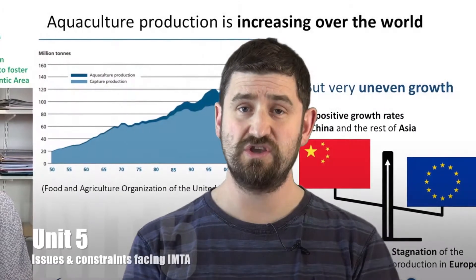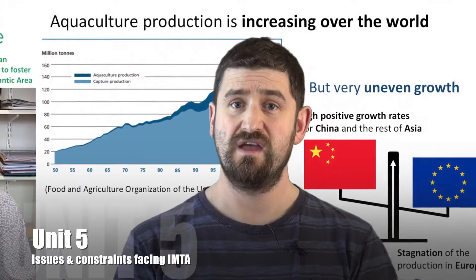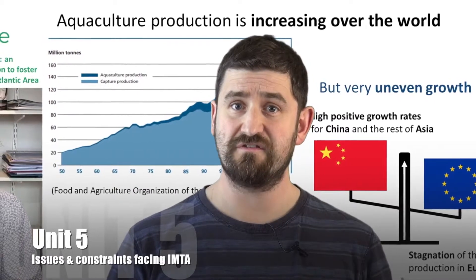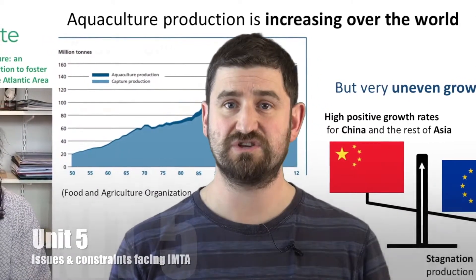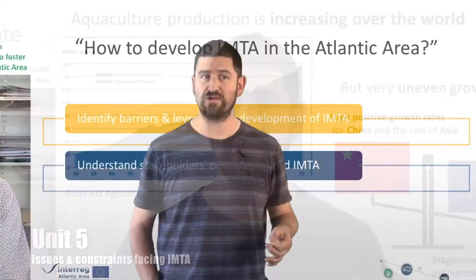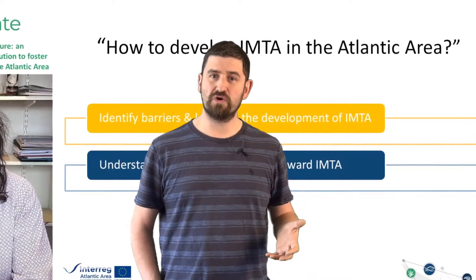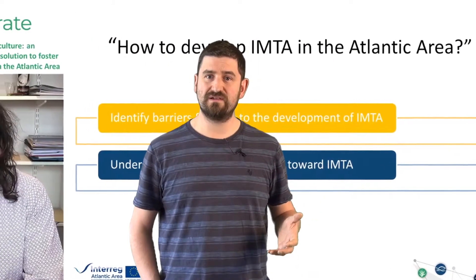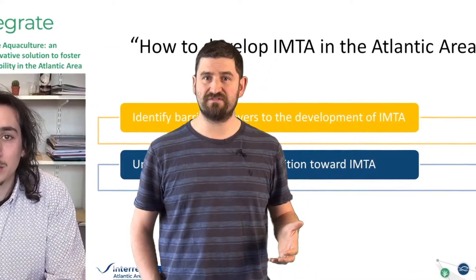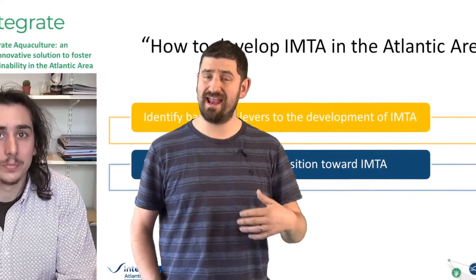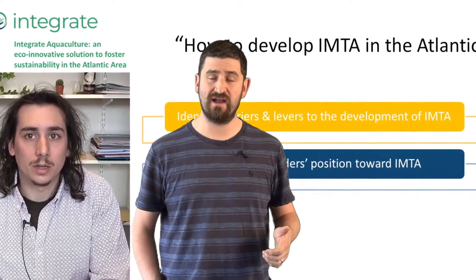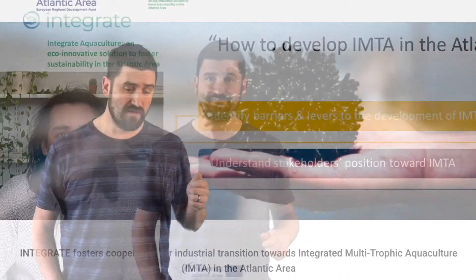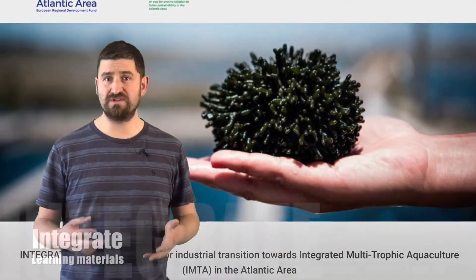And finally, as we move into Unit 5, it's a presentation from our French partner looking at issues and constraints. This looks at a form of modelling to discover the problems that may exist for IMTA in individual countries across the Atlantic Arc area and how these can be resolved and developed.